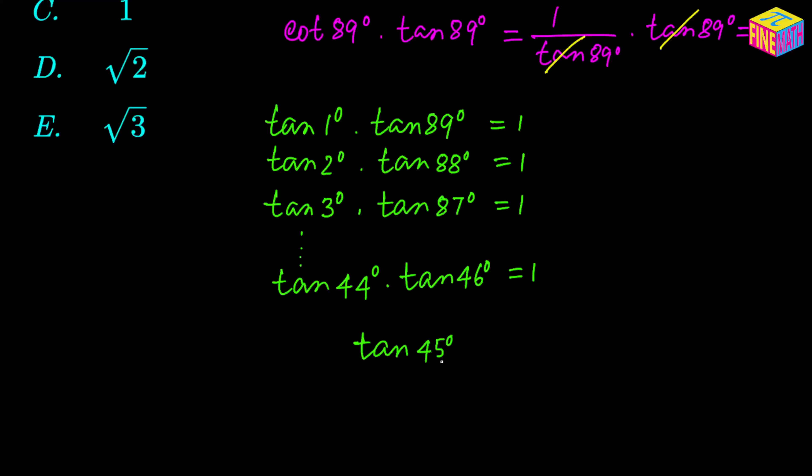Since we have an odd number of factors in this product, we have been able to create 44 pairs like this, and this is the only odd man out—he does not have a pair, but not a problem, this guy is also equal to 1.